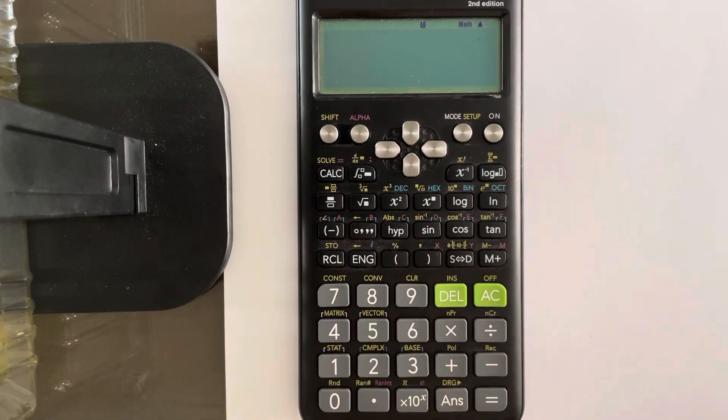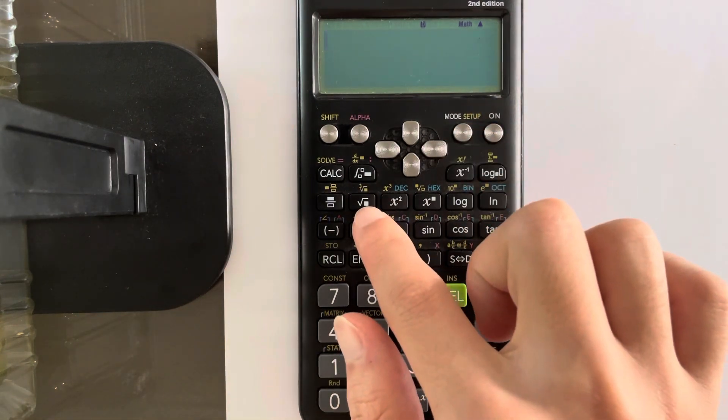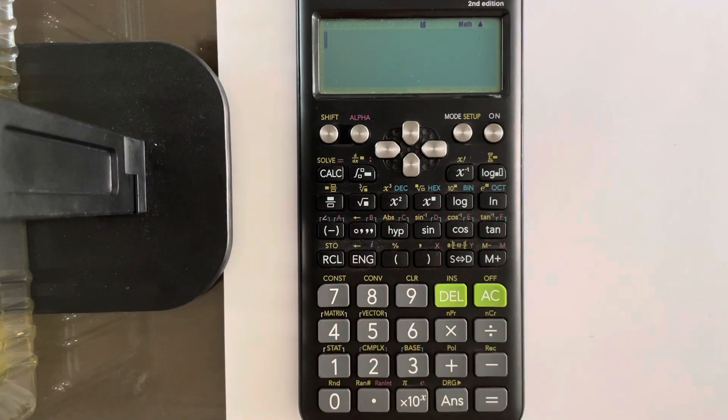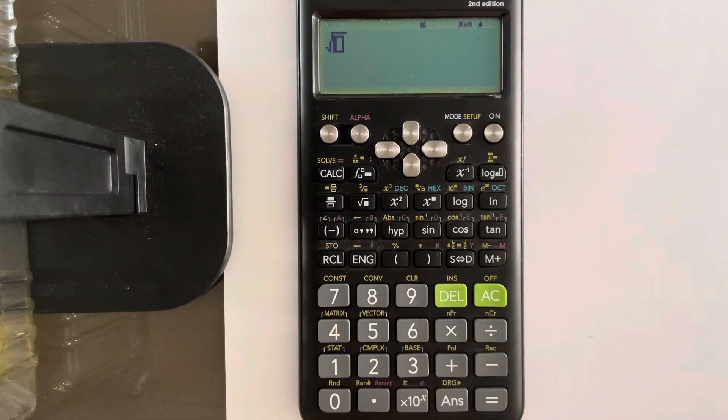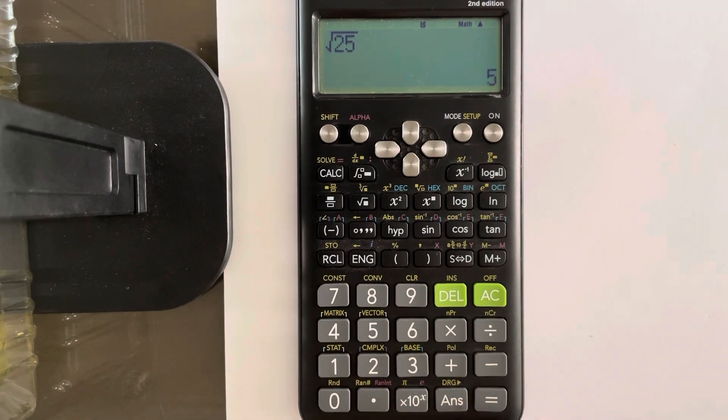All right. To do roots, just press this sign on top in white. The part of getting used to a calculator is just to play around with it. Just use it a lot. Try to answer questions using it and you'll get adjusted to it eventually. So you see this root symbol? Just press in and 25 and press equals. That'll give you 5. Square root of 25 is 5.